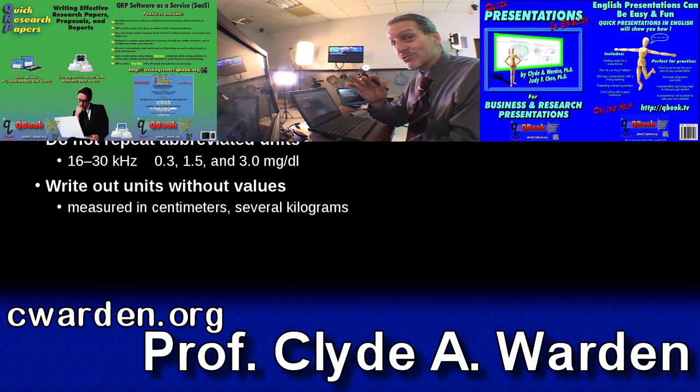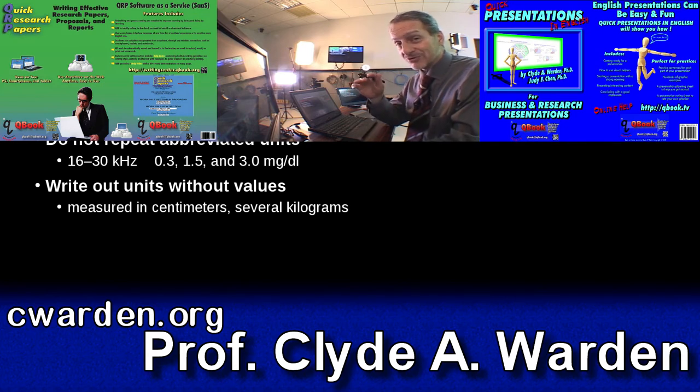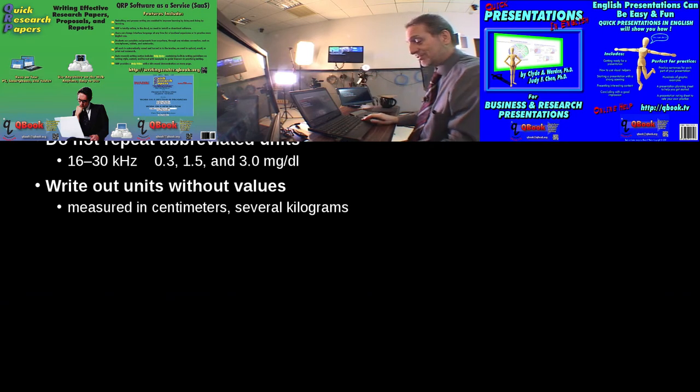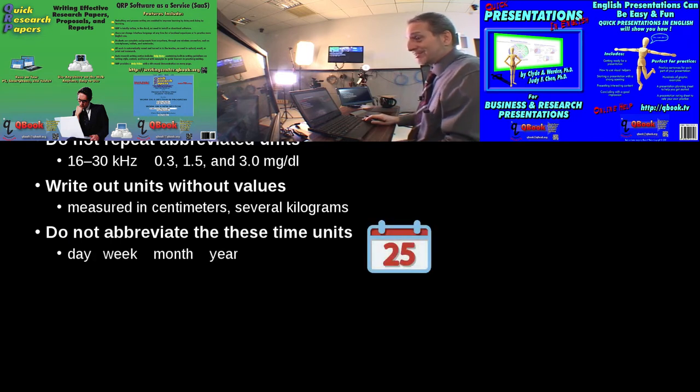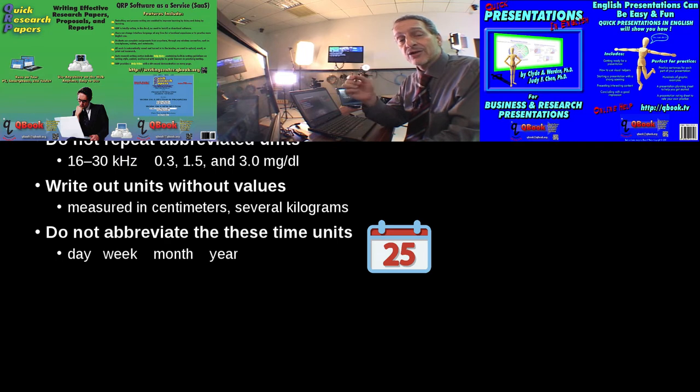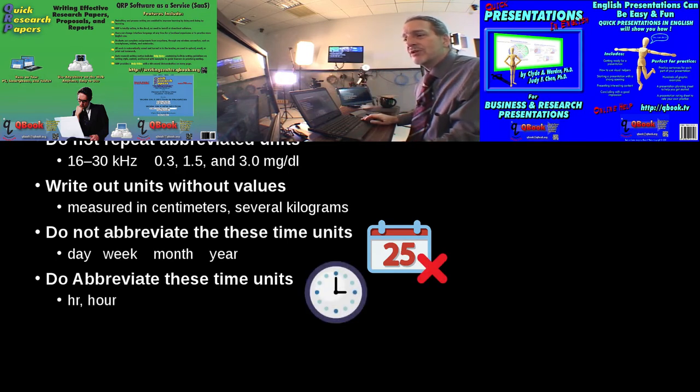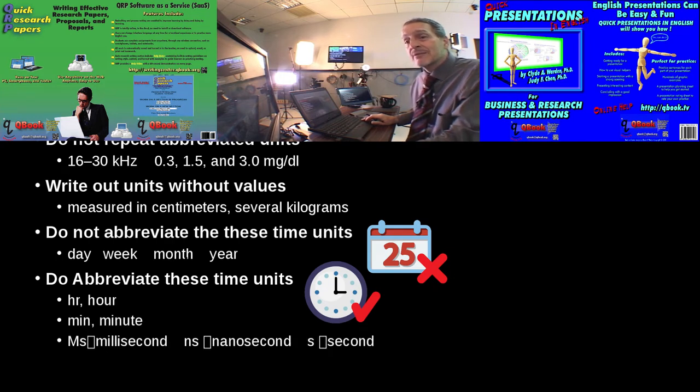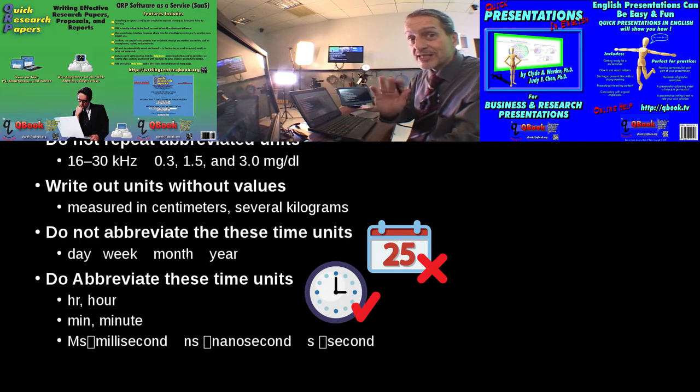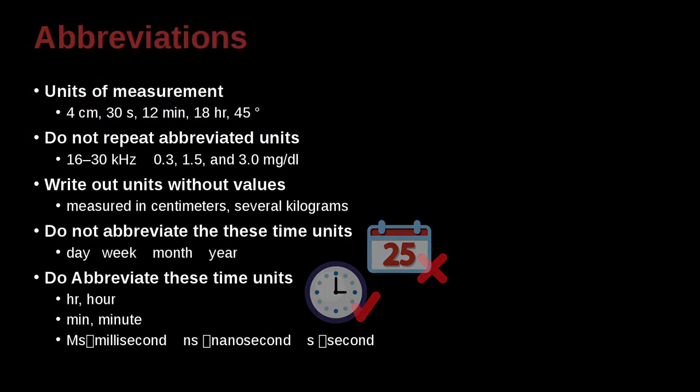Getting confused yet with all these rules of what to abbreviate and what not to abbreviate? Well, there's a couple more. So let's move on to do not abbreviate these: day, week, month, and year. Even though you abbreviate things like minutes and seconds, but day, week, month, year, you don't abbreviate. Go figure. You can abbreviate these units of time, however: hour, hr, minute, min, millisecond, ms, nanosecond, ns, and s for seconds. Please, don't ask me why. It's just the rule the APA has. I think the main reason is to avoid confusion, but just learning it confuses me.